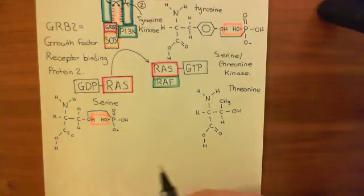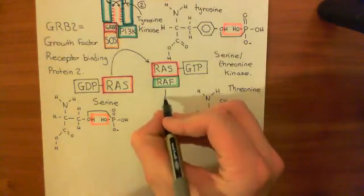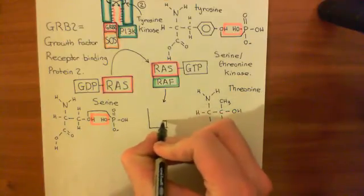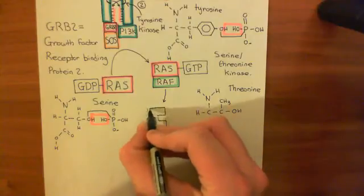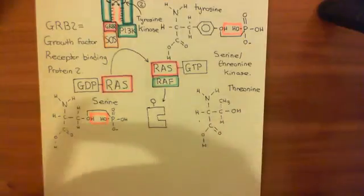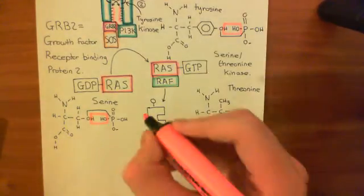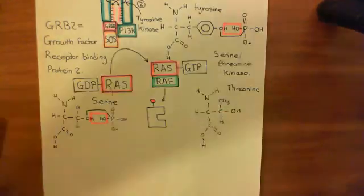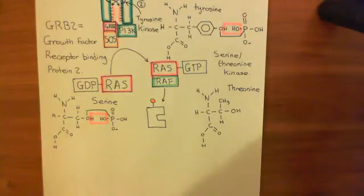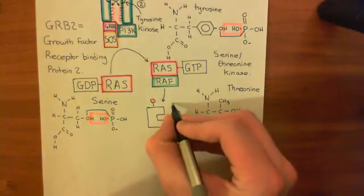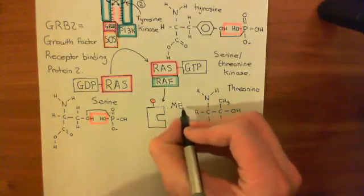Basically, what RAF is going to do is phosphorylate another protein — adding a phosphate group onto it — which itself is a serine-threonine kinase. When it adds that phosphate group, that activates this other protein. It was inactive before; now with the phosphate group added, it's going to be active. This is another serine-threonine kinase by the name of MEK kinase.